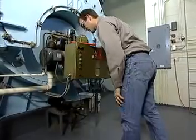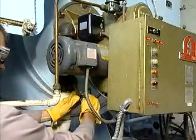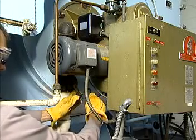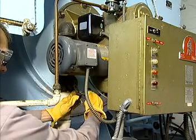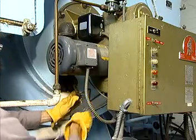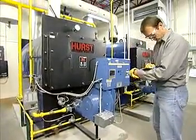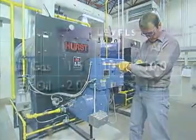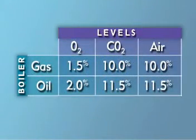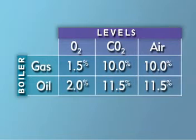Next, adjust the boiler air-fuel ratio controls. While the boiler is still operating at high-fire, adjust mechanical air-fuel linkages so that they maintain the desired air-fuel ratio. If your boiler is equipped with solid-state excess air controls, adjust the controls to the desired level of excess air. While the level of excess oxygen will vary based on outdoor air conditions, a typical oxygen level of 1.5% with a corresponding carbon dioxide level of 10% is a good target for natural gas-fired boilers. These readings correspond to an excess air quantity of approximately 10%.